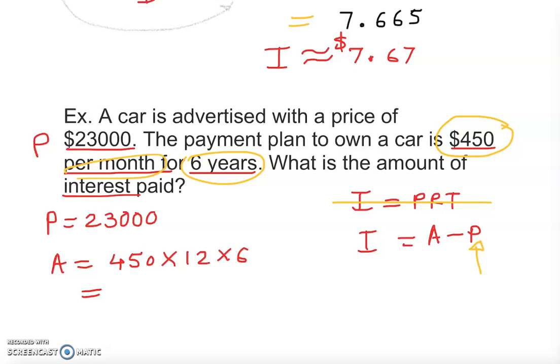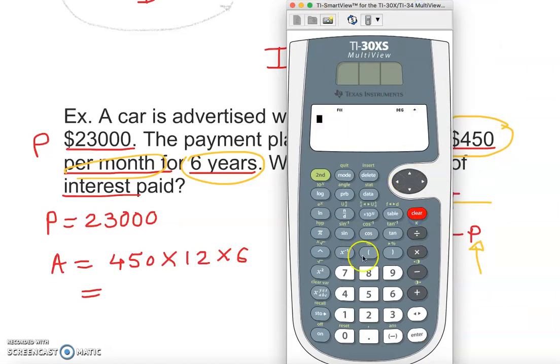Let's take that to the calculator. It's 450 times 12 times 6 - that gives you $32,400. That is basically the total amount.